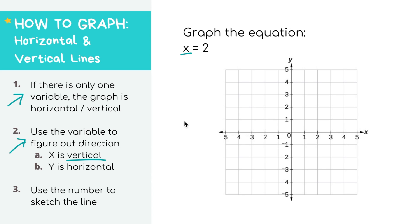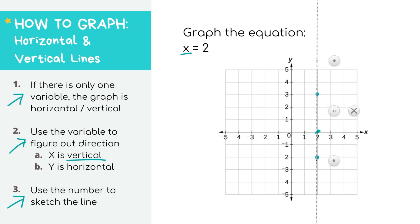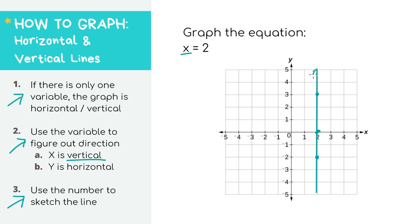In this example, we have x equals two, so we know it's going to be a vertical line. Step three is just to sketch it. No matter what the value of y equals, whether it's y equals zero, y equals three, or y equals negative two, the x value will always equal two. Conceptually, the graph of a linear equation shows visually all of the points that are solutions for the equation. So in this case, all of the points on this line are solutions to the equation x equals two.